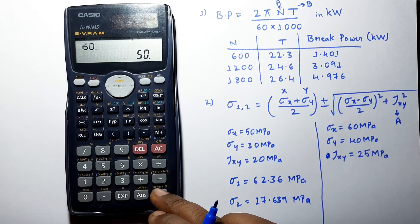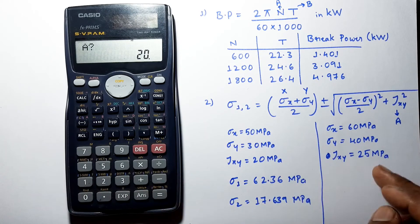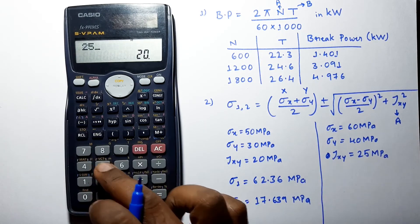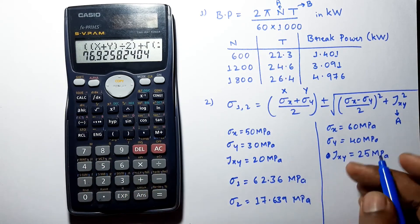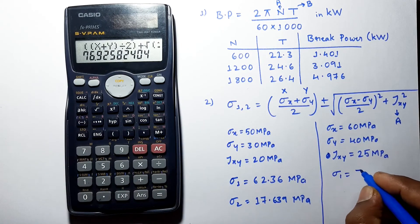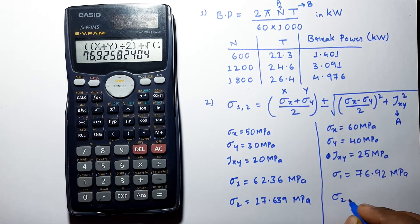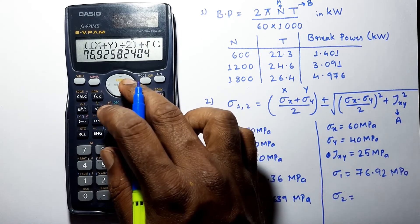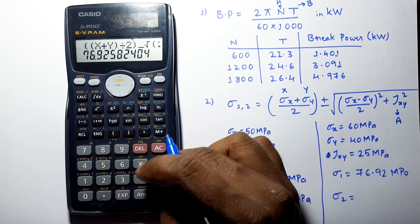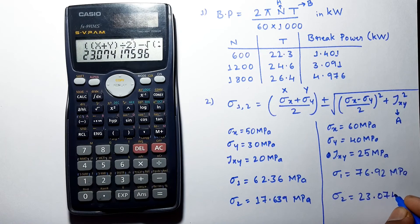Enter the values: sigma x as 60, sigma y as 40, and tau xy as 25 MPa. We are getting sigma 1 as 76.92 MPa. Change the sign to minus and we get sigma 2 as 23.074 MPa.